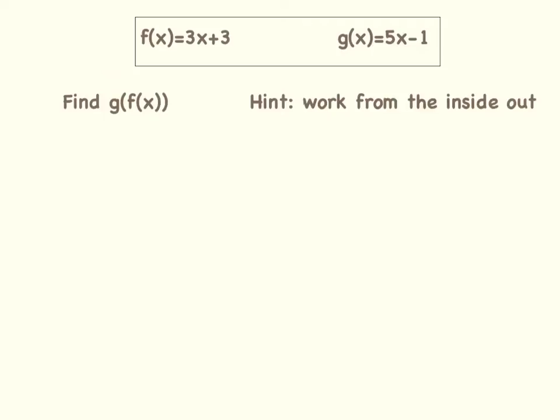Again, if you notice, we are working from the inside out. We are using the f(x) equation to put in place of the x value in the g equation. So I am going to rewrite g(f(x)) like this: g(3x + 3) equals... Now all I did is I took 3x + 3, which came from my f(x) equation, and I am going to plug it in for the x in the g equation.